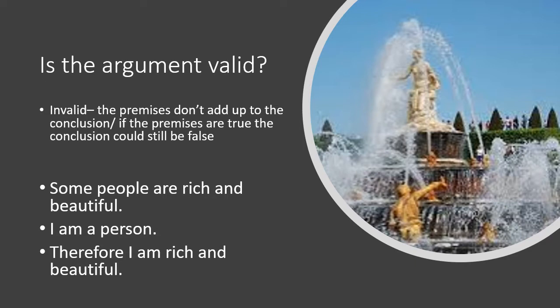The main reason it doesn't follow is that the first premise says some people are rich and beautiful, not all people. So the second premise — that you are a person — doesn't force the conclusion that you must be rich and beautiful. You may be one of those people who is a person but not rich and beautiful. That's what makes it an invalid argument: even if the premises are true, they don't lead to the conclusion necessarily following.